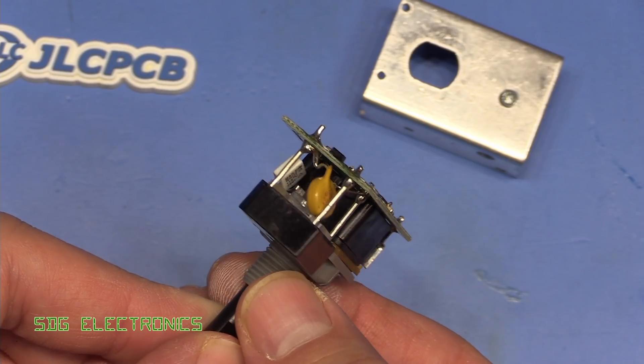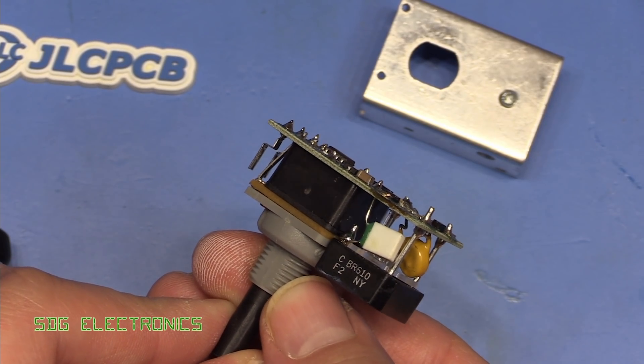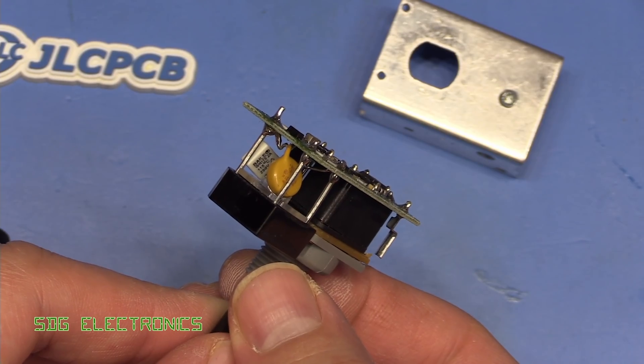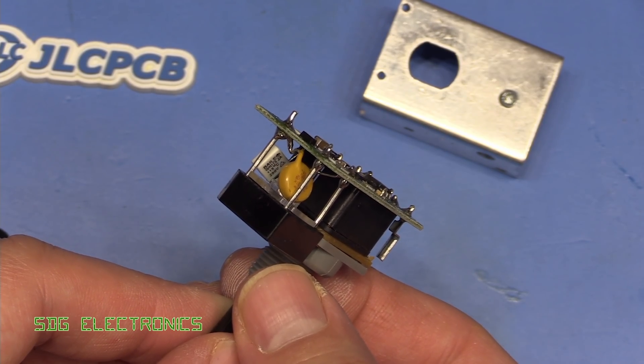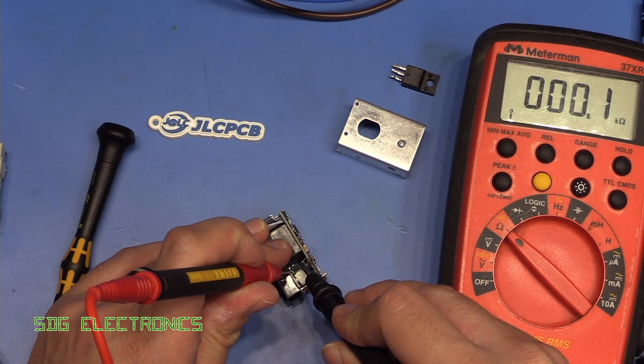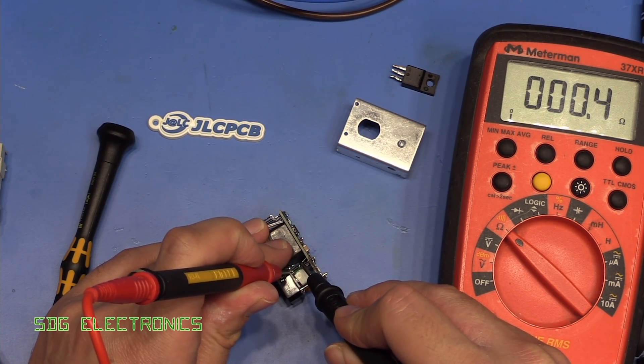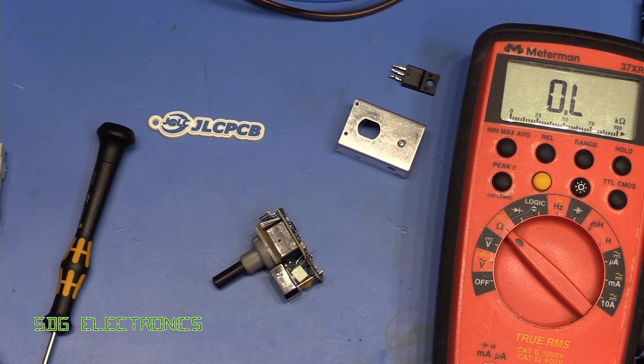So that's the MOSFET out, but I noticed there's a thermal fuse that was pressed against that MOSFET. I don't know if that's a resettable one, I'll have to look at the part number, but maybe we've just tripped that. And it looks like that fuse is still intact, so we're in luck there.